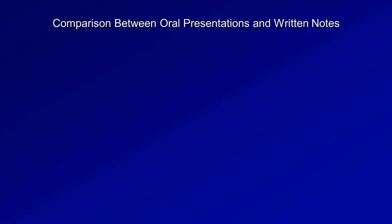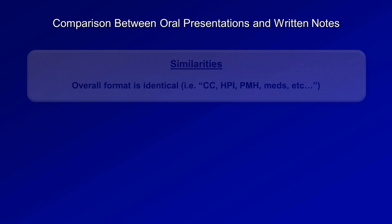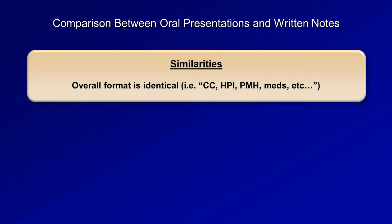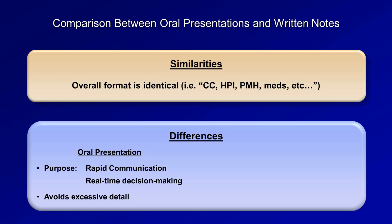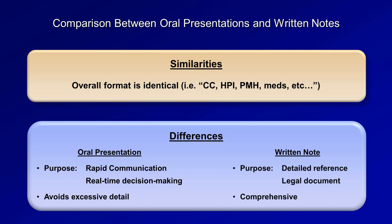There are obvious similarities between oral and written H&Ps — the overall format is identical; each has a chief complaint, a history of present illness, past medical history, etc., presented in the same order with roughly the same content. However, there are important differences. The oral presentation aims for rapid communication and real-time decision-making, so it avoids excessive details, while the written note serves as a detailed reference and legal document and should be very comprehensive.